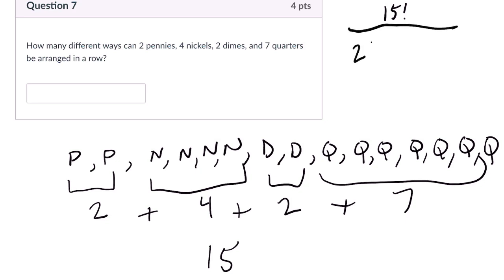we want to divide by all the repetitions. In other words, if I swap these two pennies, we're assuming they're identical pennies, it'll look the same. So there are two factorial ways of doing that.